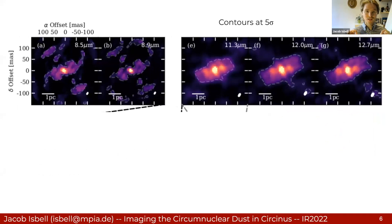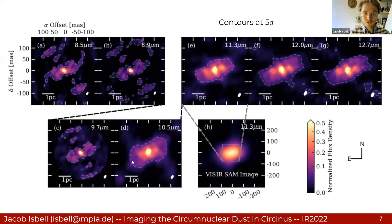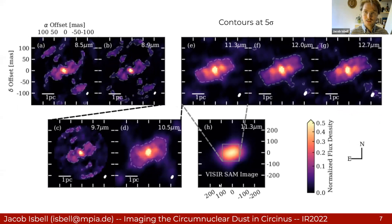On the top here I have all of the continuum images, from 8.5 to roughly 13 microns. I'll now add the images made within the silicate absorption feature, which have lower flux and lower signal-to-noise, but the morphology is quite similar. We also have a VLT/SAM sparse aperture masking image reconstruction at 11.3 microns, which helps give context for where all of these MATISSE images are taking place.